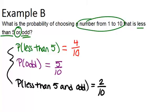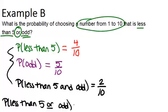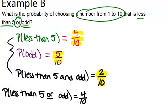Now we can use all of this information to get our answer. The probability that a number will be less than 5 or odd is the sum of the probability that it's less than 5 and the probability that it's odd, minus the probability that it's both less than 5 and odd — because those are the numbers we've counted twice. So we get 4 out of 10 plus 5 out of 10 minus 2 out of 10, which is 7 out of 10.